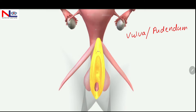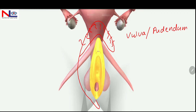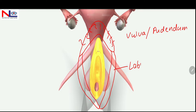The first part is external genitalia, commonly known as vulva or pudendum. It consists of mons pubis, which is a collection of subcutaneous tissues and fat pad with hair follicles, and it is anterior to the symphysis pubis. Lateral to this are two large folds of skin with subcutaneous tissues, similar to a lip, known as labia majora.